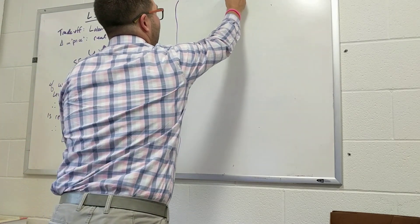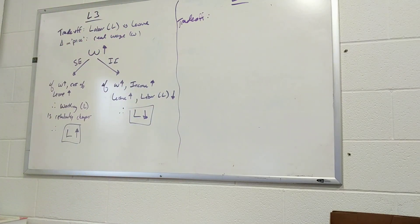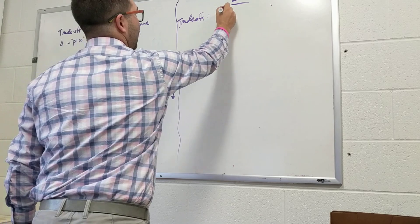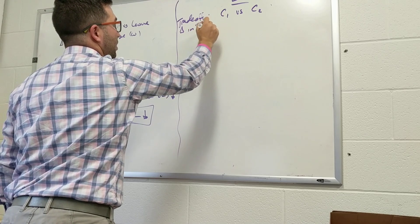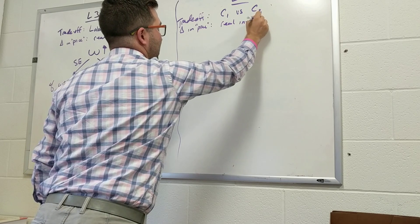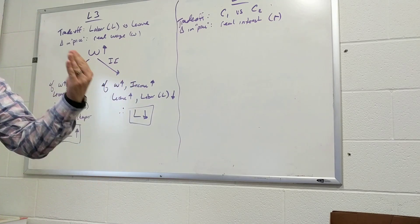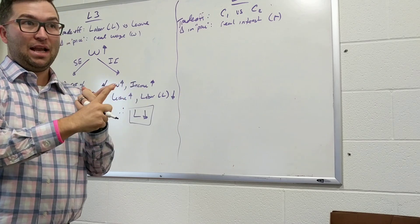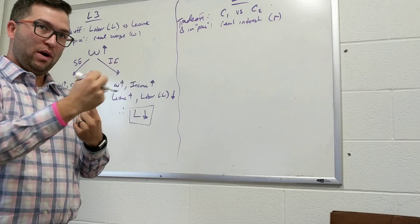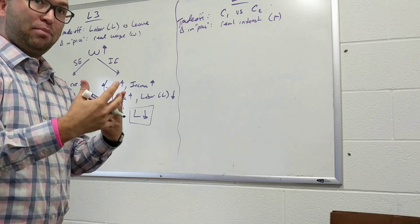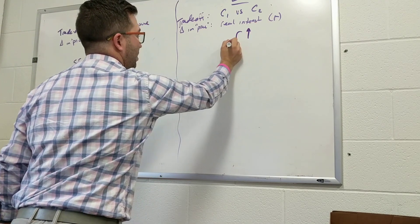Flash forward to lesson five — again we have a trade-off: current consumption versus future consumption. The change in price in this model is the real interest rate. If I want to consume more today I need to either save less, losing the opportunity of the real interest rate on savings, or borrow against my future income, also losing the real interest rate. So the real interest rate is the price of current consumption.